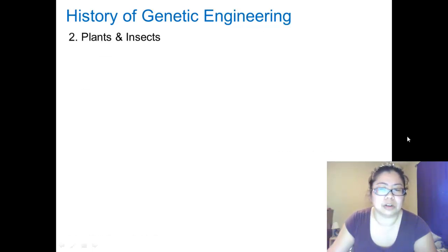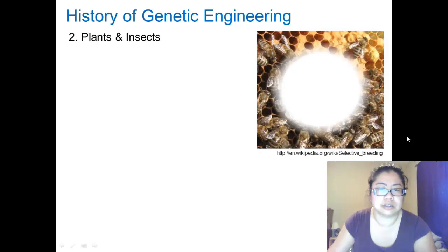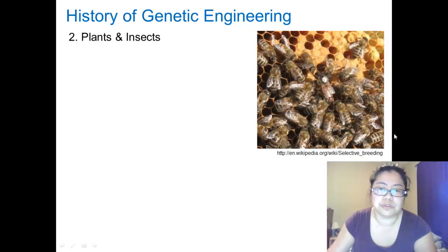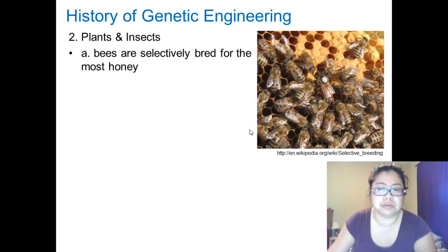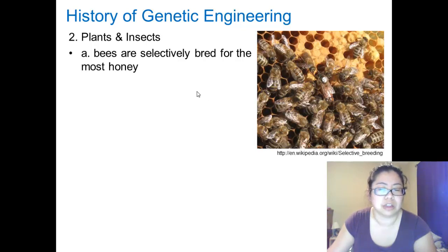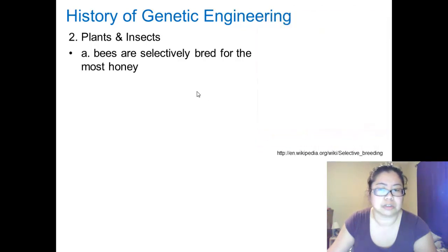Plants and animals are also selectively bred. For honey bees, they are selected to breed for the most honey production. At one point, a human found that a certain type of bees produce more honey, and to our advantage, we chose those bees to start new bee hives. Thus, we have produced honey bees.